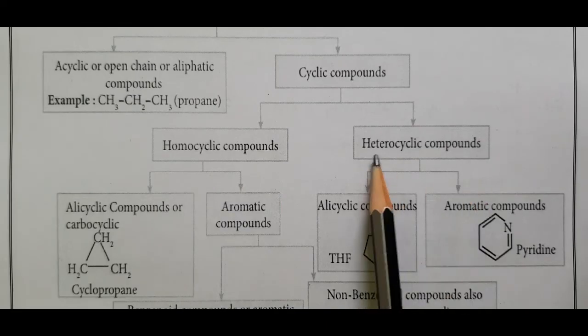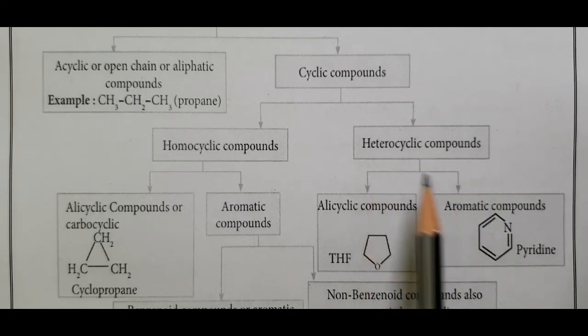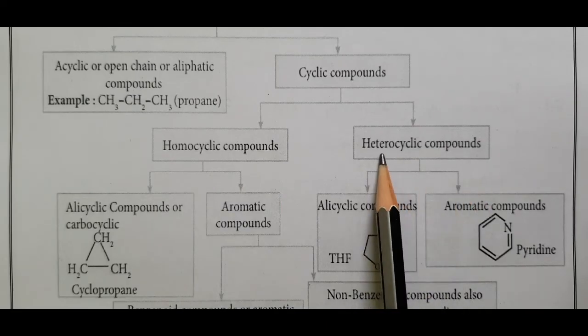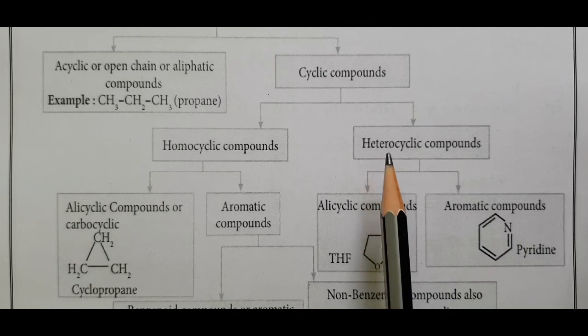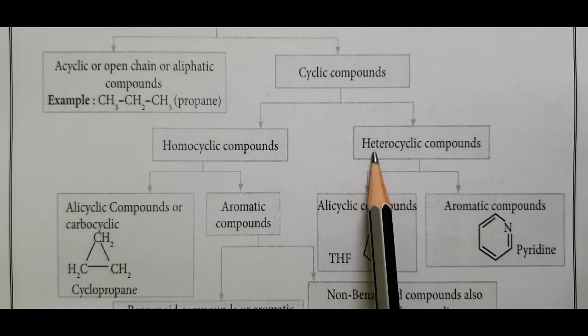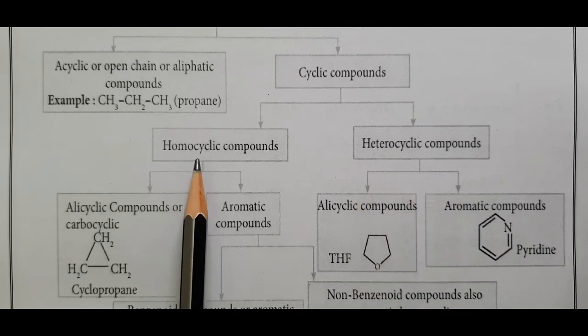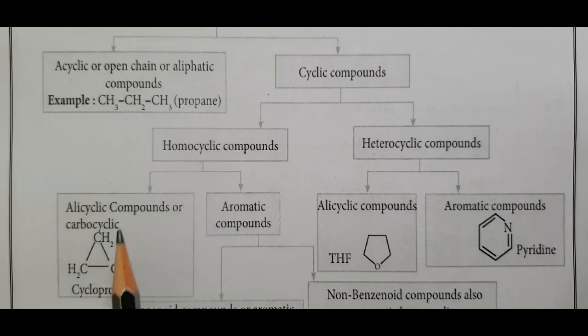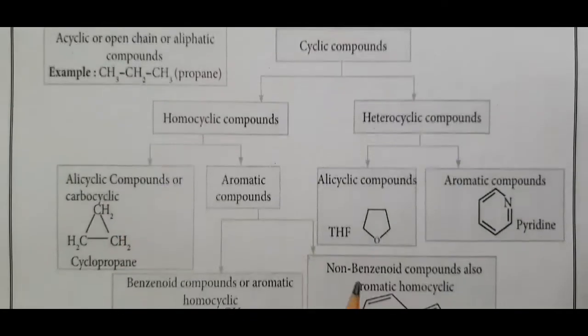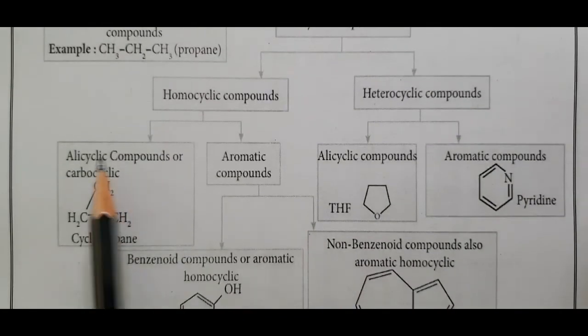Organic compounds can be classified as heterocyclic, containing a heteroatom. A heteroatom is an atom other than carbon and hydrogen — such as oxygen, nitrogen, or sulfur. Homocyclic compounds are further classified into alicyclic and aromatic.